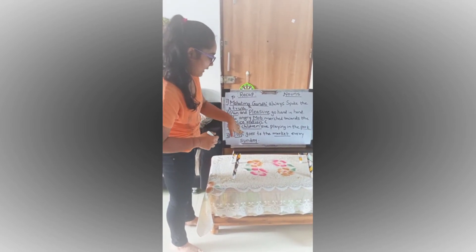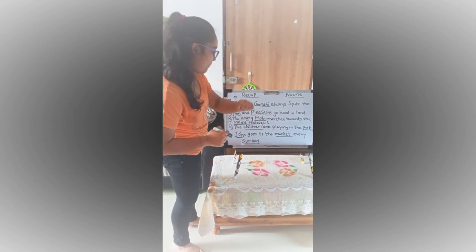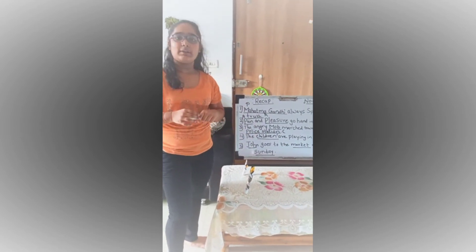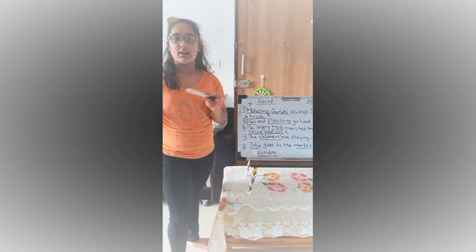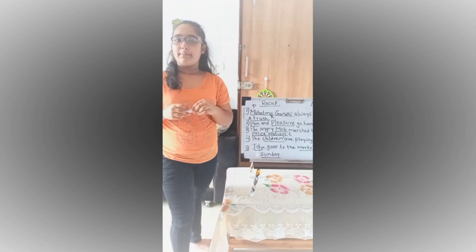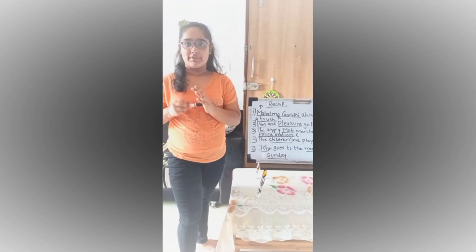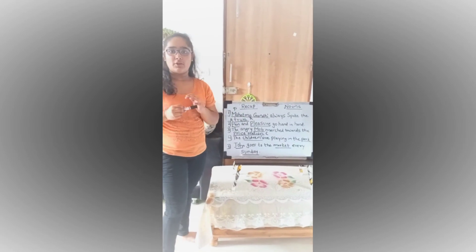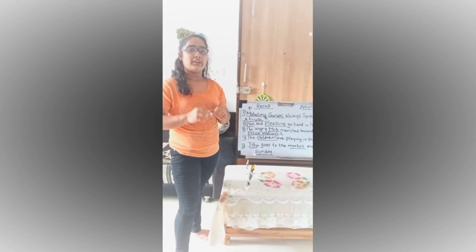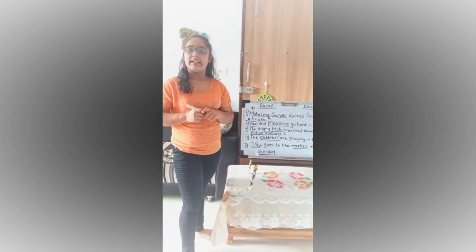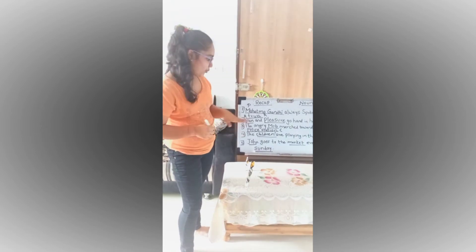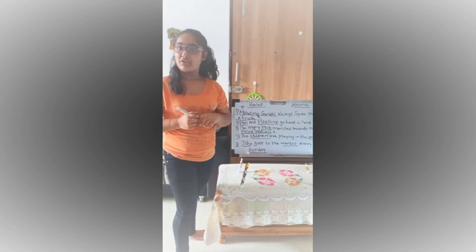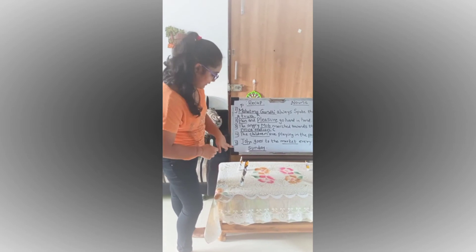Next: the children are playing in the park. Here, children is a common noun because we are not referring to a particular child but talking in general. And park is also a common noun because we are not mentioning the name of the park — it's a common place. So both children and park are common nouns.